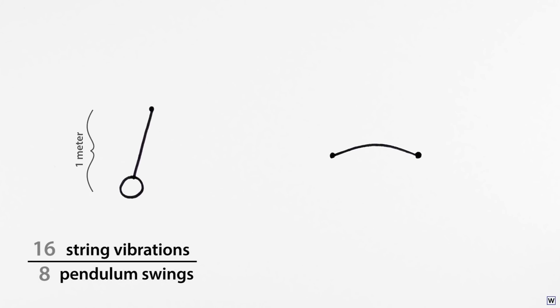After setting the string vibrating and the pendulum swinging, you could simply have your friend count string vibrations while you count pendulum swings. If you used a roughly one meter long pendulum, as Mersenne did, the time required for one swing is close to one second. So if in the time it takes you to count eight pendulum swings, your friend counts sixteen string vibrations,